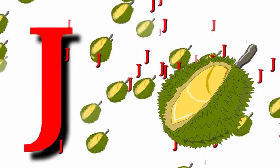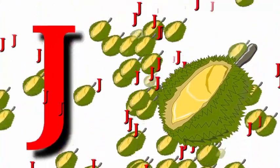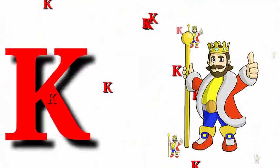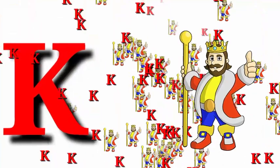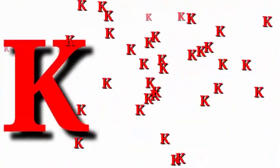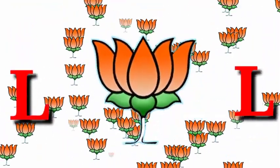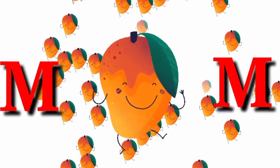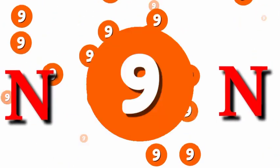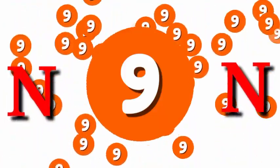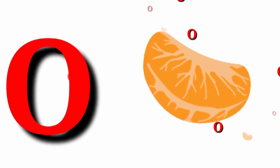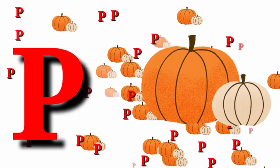...for jackfruit. K for king. L for lotus. M for mango. N for nine. O for orange. P for pumpkin.